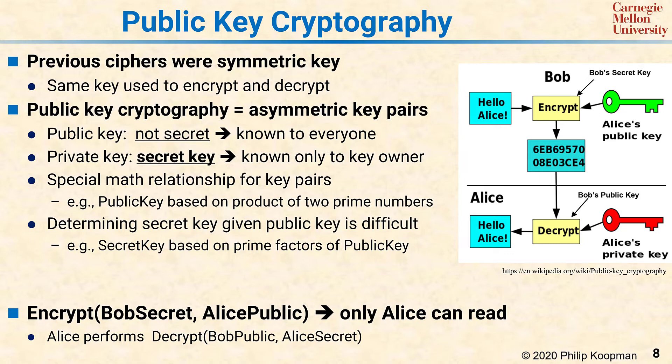The nice thing about this is that once the message has been encrypted, only Bob could have sent it and Alice can read it. Even if an attacker knows Alice's public key, they can't decrypt the message, because decryption requires her private key — which they can't obtain because they don't have enough computational power to factor these huge primes.